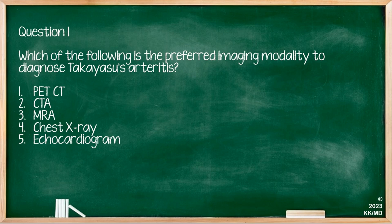Which is the preferred imaging modality to diagnose Takayasu arteritis? Options are PET-CT, CTA, MRA, chest X-ray, and echocardiogram. The preferred modality is MRA. However, PET-CT and CTA are also frequently used. Chest X-ray and echocardiogram are reasonable investigations for a patient presenting with chest pain before nuclear imaging is considered.